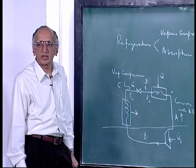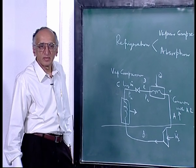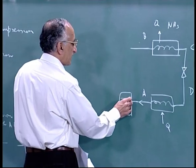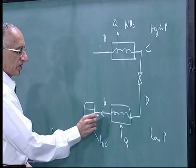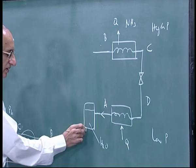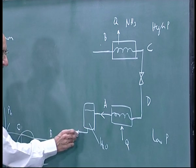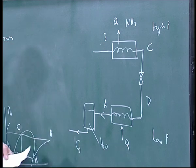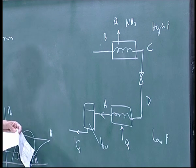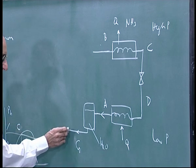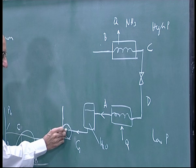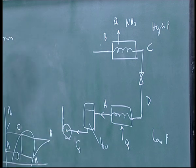Instead of using a compressor, absorption refrigeration works differently. Compressing a gas requires much more energy than pumping a liquid, and you also take advantage of enthalpy changes during absorption. Water is present, and the ammonia coming in is absorbed into it, so a concentrated solution of ammonia is taken out. This concentrated solution is then pumped — using a centrifugal pump — up to what is called a regenerator.